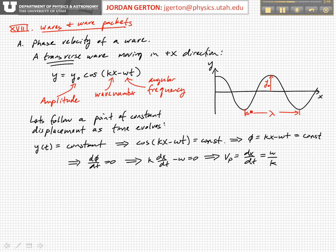And so what we mean when we say a point of constant displacement as time evolves is that y, the displacement as a function of time, is just equal to constant. And so that means, if we look at the equation of the wave, that the cosine has to be constant, which means that the phase of the wave has to equal a constant.